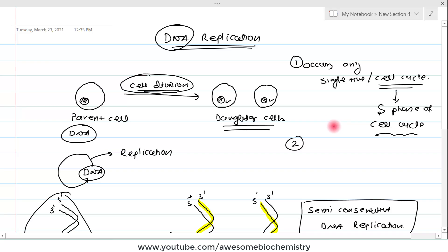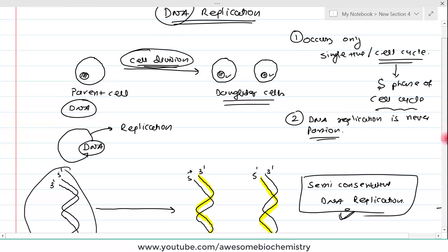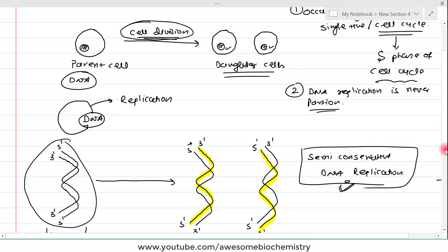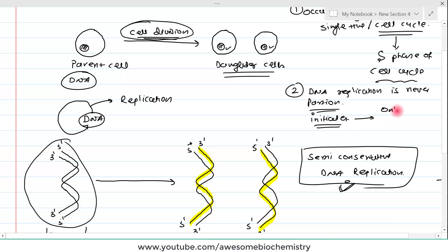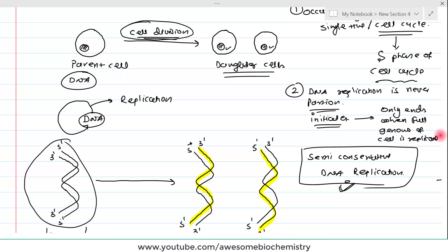The second important thing: DNA replication is never partial. Once the cell starts DNA replication, it never stops in between until the full genome of that particular cell is replicated, and then only it stops. In other words, when DNA replication initiates, it only terminates when the full genome of the cell is replicated. DNA replication never occurs such that only 10% of the full genome is replicated.